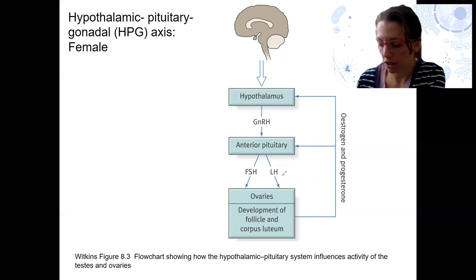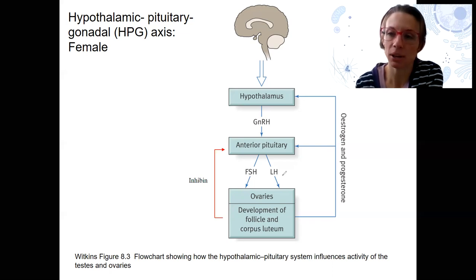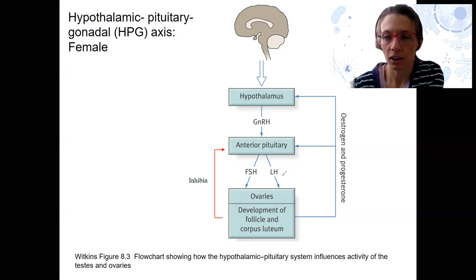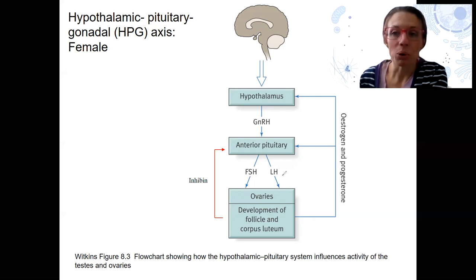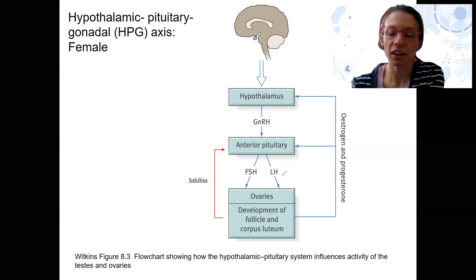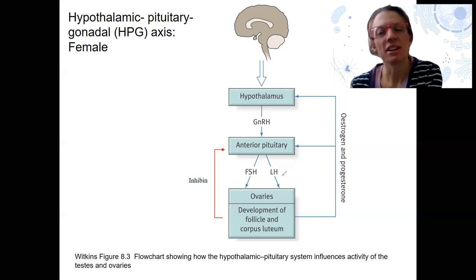Both estrogens and progesterone regulate the menstrual cycle to make it a 28-day cycle. One thing not shown here is inhibin. Inhibin is that peptide hormone also produced in males — it's also produced in the female gonads to feed back and shut off the system. It's released from the follicle and corpus luteum in varying amounts. We're going to go through tying this in with the ovarian and follicular cycles — it's the last big thing of this week and it's a big one.